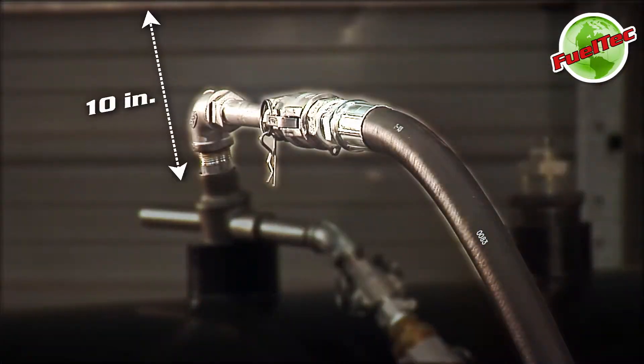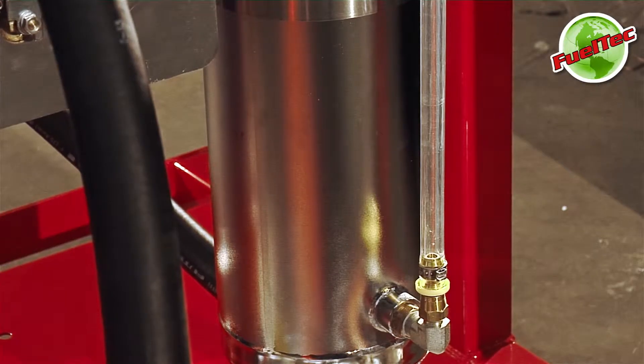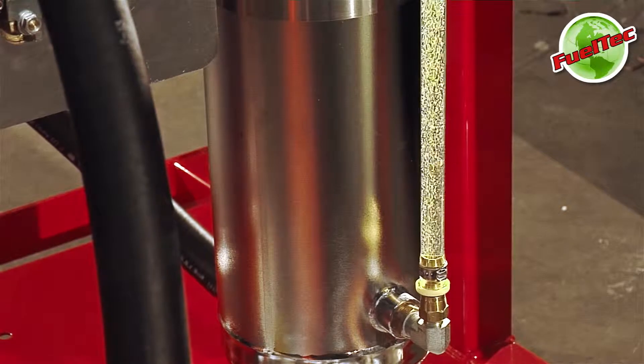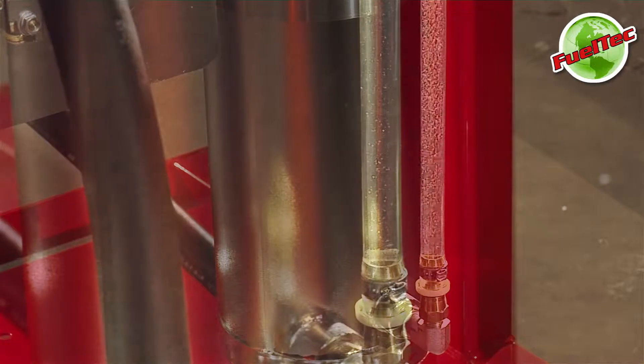Raise the pickup tube 10 inches above the tank bottom and turn on the switch. Observe the sight tube as the fuel level rises. Make sure to notice the fuel color. When the sight tube is full of fuel, lower the pickup tube to the tank bottom to begin removing water.